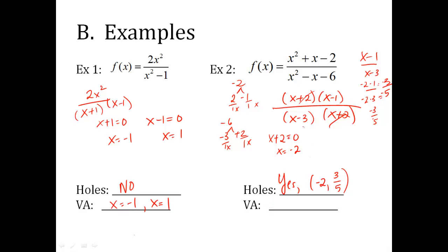Vertical asymptote. Remember, you set whatever factors left over equal to zero. x minus three equals zero. So x equals three. All right. The other factors have canceled and gone away. You just deal with what's left.